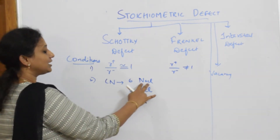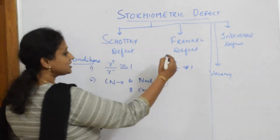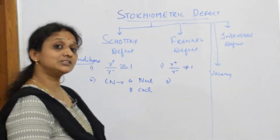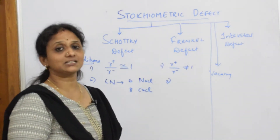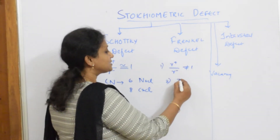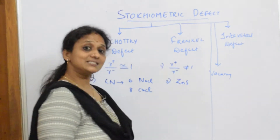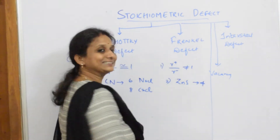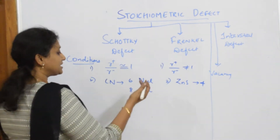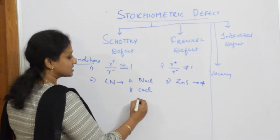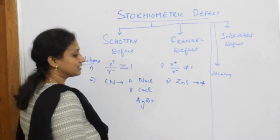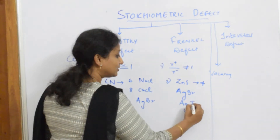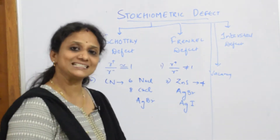Both the size of the cation and the anion is similar in Schottky defect. For Frenkel defect, the coordination number is less than six — almost four or so. For example, zinc sulfide shows Frenkel defect because its coordination number is four. Other examples include AgBr and silver iodide, which have coordination numbers less than that.